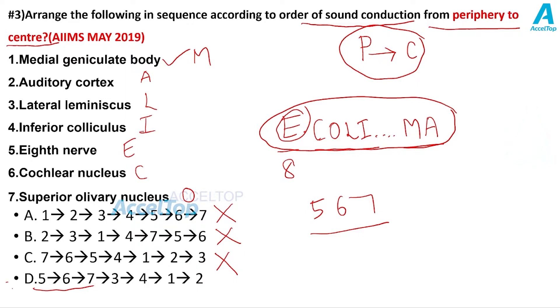So fourth one is the option. Fourth one is the correct answer. If you want to check, if you want to make it doubly sure, you see 3 is L right. So L is 3, I is 4, M is 1, A is 2. 3, 4, 1, 2. So the correct answer is option D.